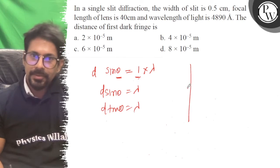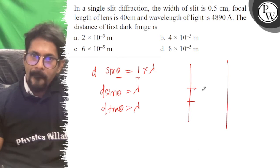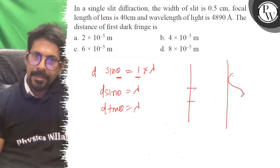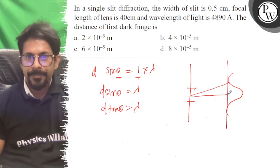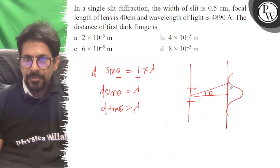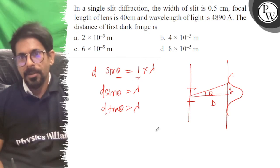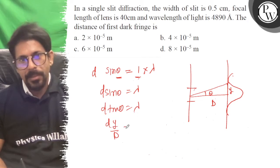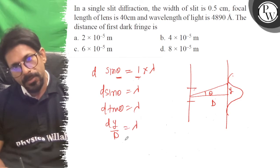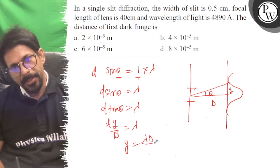And if you see the situation, this is your slit. This is the maximum and this is the minimum. This is theta. This is the y which I want to write and this is D. So, tanθ equals y by D, which equals lambda.